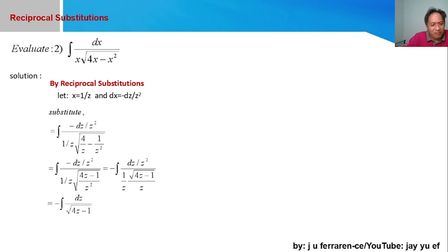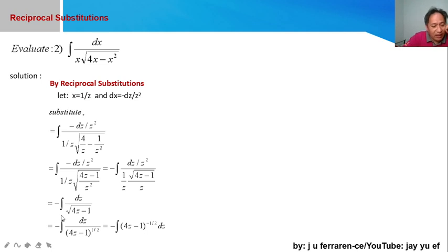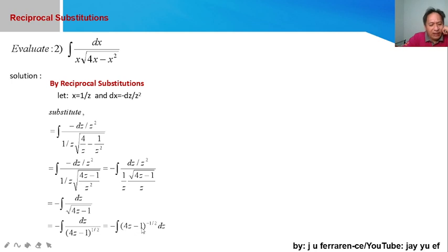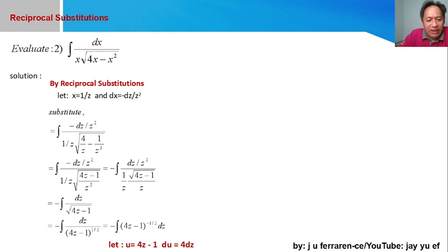What remains is the negative integral of dz over the square root of (4z − 1). To use the power rule, we rewrite the radical as a fractional exponent, making it (4z − 1)^(−1/2). Letting u = 4z − 1, its differential is du = 4 dz. Since our integral is missing the constant factor 4, we insert 4 inside and place 1/4 outside to neutralize.